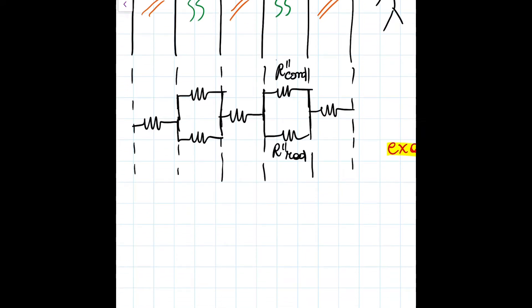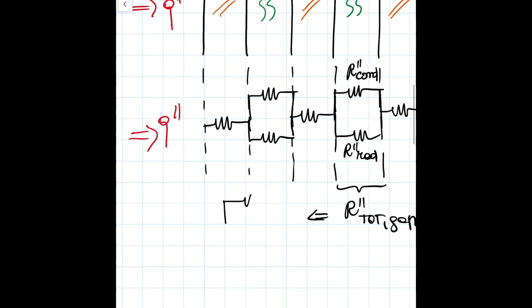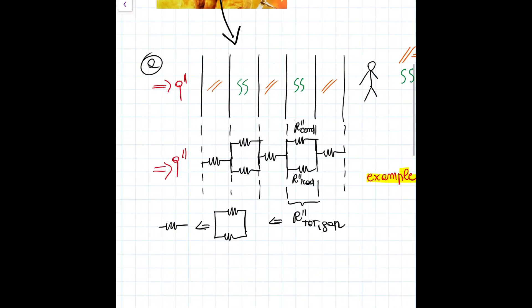Therefore, our ultimate goal now is to understand how to calculate the R_total of each gap. In other words, transform this parallel branch into a single, simple resistance, which we can add to the other ones in series.